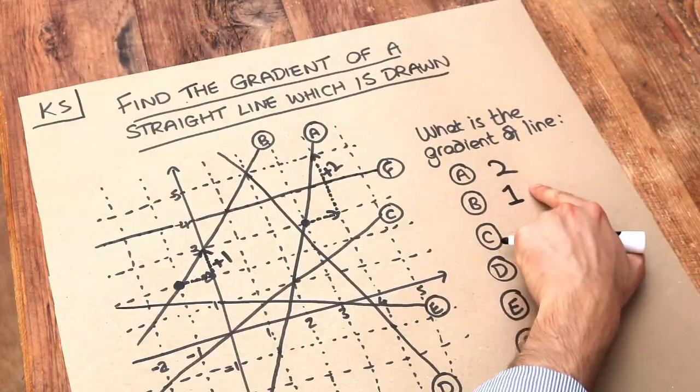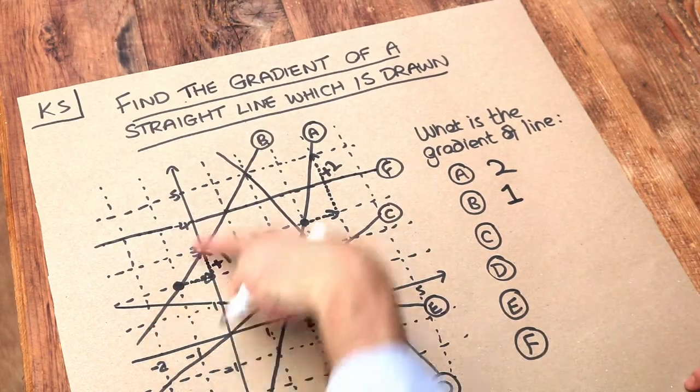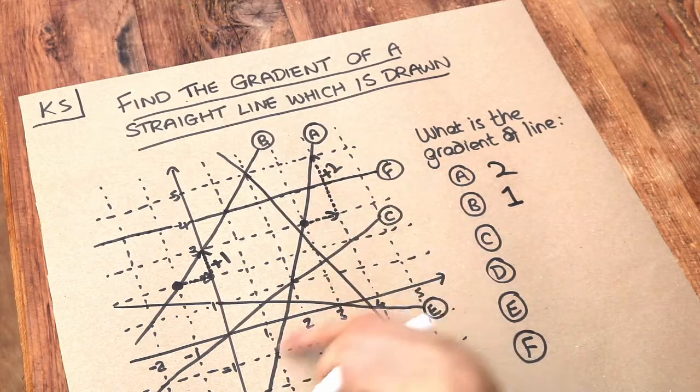So we can see this is a shallower gradient than this one, and indeed this line is not quite as steep as A is it? That's a much steeper line.